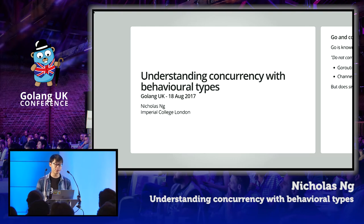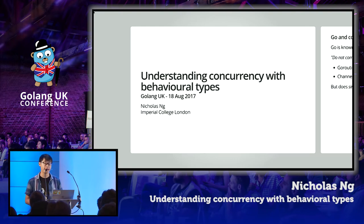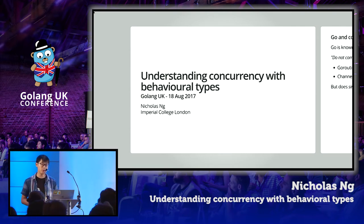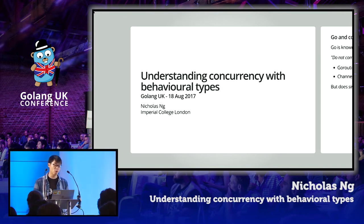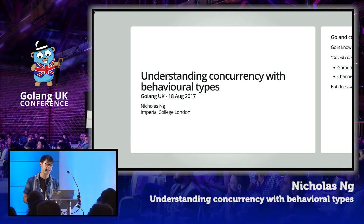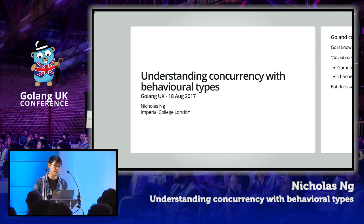Hi, I'm a computer science researcher, and today I'm going to talk about an ongoing research project where we try to verify concurrent Go programs using an approach called behavioral types. I know the title of my talk is a bit cryptic, but I hope at the end of the talk you have a vague understanding of what behavioral types are and how we can use them to understand concurrency in Go and other programming languages.